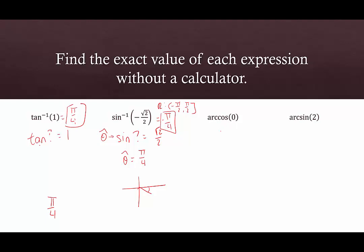Arc cosine of 0: this is asking at what radian measure does cosine equal 0? Cosine equals 0 at pi over 2. We generally want to check, especially because these are new, that the values we're getting fall within the range. The range for arccosine is from 0 to pi, and pi over 2 is within that range.